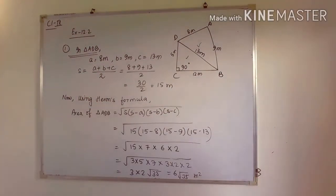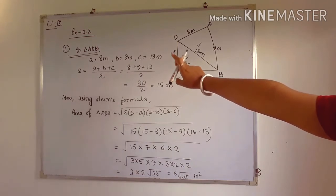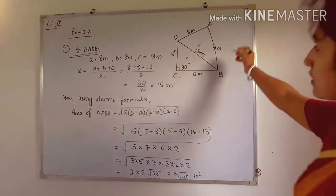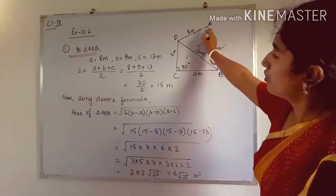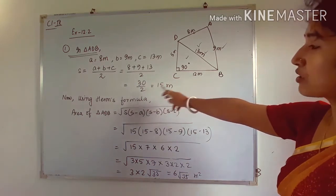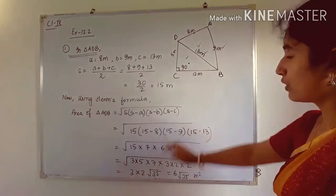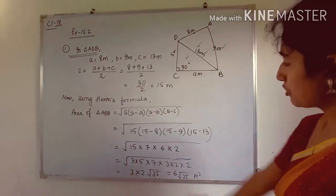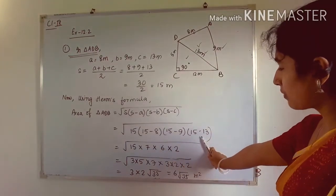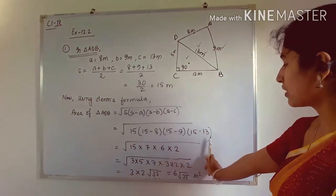Similarly, we find the area of triangle ADB. The sides are A = 8 m, B = 9 m, C = 13 m. The semi-perimeter is (8 + 9 + 13) / 2 = 15 m. Using Heron's formula: √(15 × (15−8) × (15−9) × (15−13)) = √(15 × 7 × 6 × 2). Note: 15−9 gives 6, not 5 as misspoken.